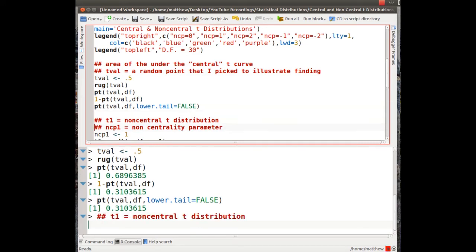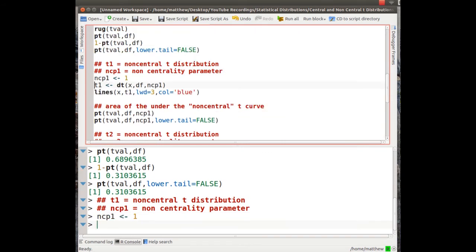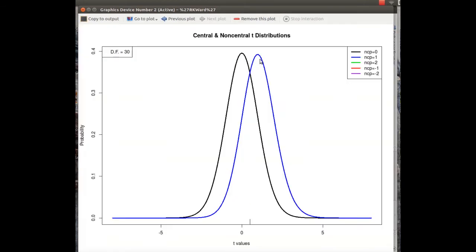Now let's look at some non-centrality, or noncentral t-distributions. I'll pick a non-centrality parameter of 1, and let's plot that. And here it is, and note that it's shifted to the right. And the more we, or the larger we make the non-centrality parameter, the more this is shifted to the right. And that becomes important when we're looking at power or sample size selection in a t-test.